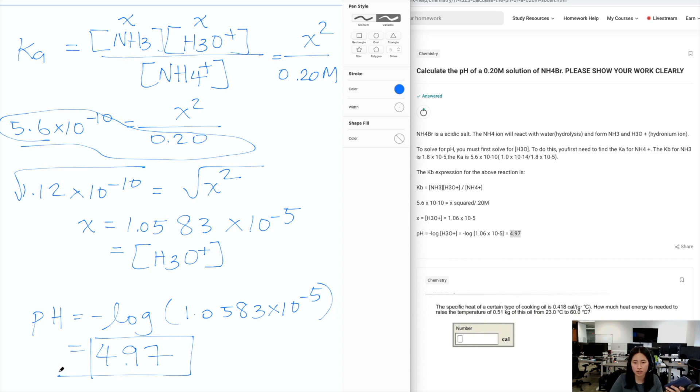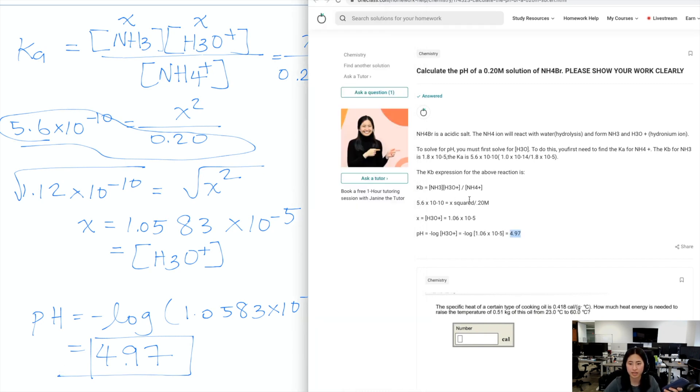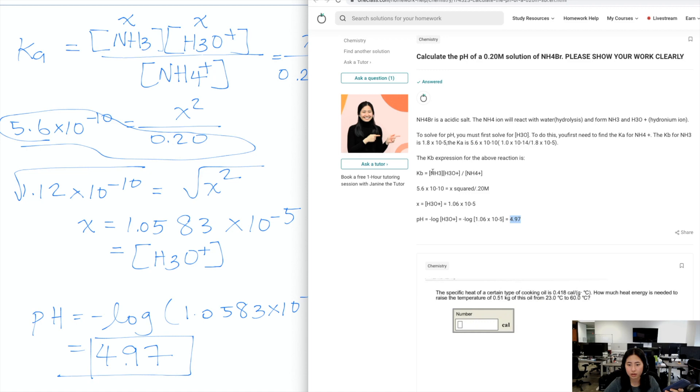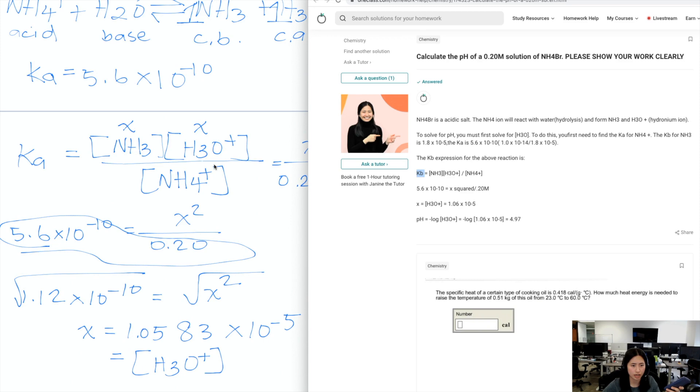And alternatively, because they brought up Kb, so Kb right here, they said it was 5.6 times 10 to the negative 10. This should be Ka, not Kb, because we're dealing with NH4+. So this is Ka, and that's equal to NH3 times H3O+, divided by NH4+. So they've pretty much done it this way, which is similar to this. But the only correction I would say is this should be Ka.